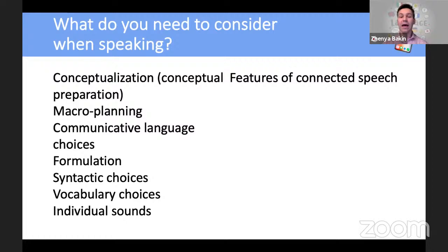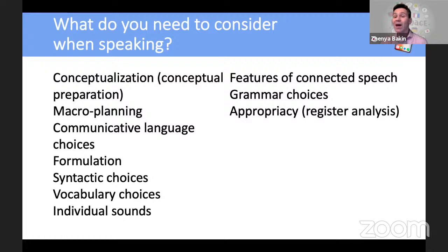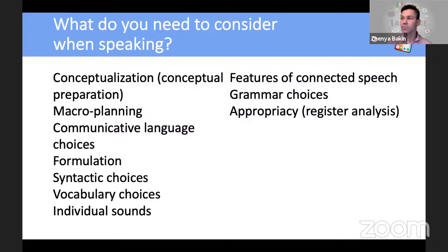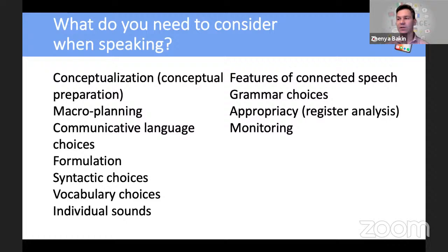Students need to think about connected speech and make decisions. There will be grammar choices — I've already mentioned that. Register analysis: you cannot say 'hello' to Her Majesty, and probably shouldn't say 'hello' to your boss — 'good afternoon' would be more appropriate. When coming to a job interview, you don't want to say 'what's up.' Monitoring is another aspect: while speaking, we constantly check what we are saying, and it takes a lot of energy and time.